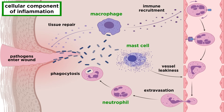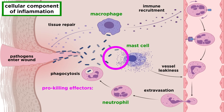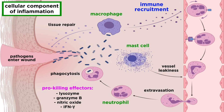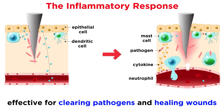This component includes actions like phagocytosis, which is enhanced by opsonization of the target with complement and antibodies. It also includes release of pro-killing effectors such as lysozyme, granzyme B, nitric oxide, and interferon gamma, as well as propagation of the immune response through release of other cytokines and chemokines. Many cells involved in the cellular component are also critical for repairing tissue damage.